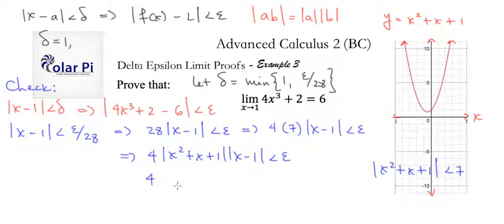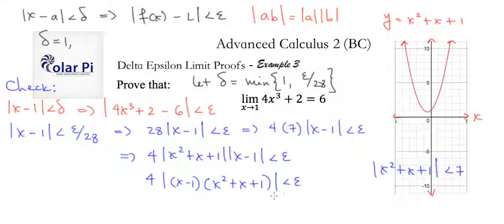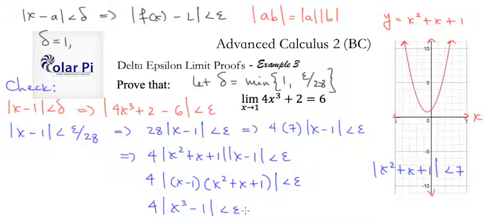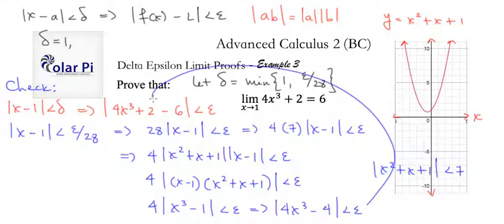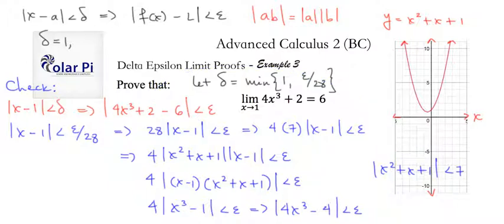By reverse application of the absolute value multiplication rule and the commutative property, I could write 4 times absolute value of x minus 1 times x squared plus x plus 1, which equals 4 times absolute value of x cubed minus 1, which is less than epsilon. That means absolute value of 4x cubed minus 4 is less than epsilon, which means absolute value of 4x cubed plus 2 minus 6 is less than epsilon — since 2 minus 6 is negative 4. So we've done the check in addition to the proof.